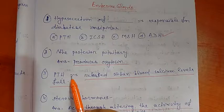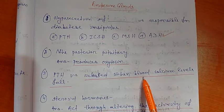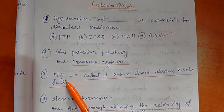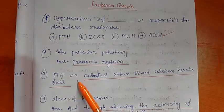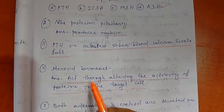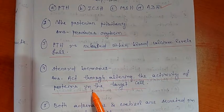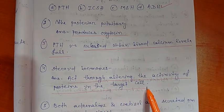PTH, that is parathyroid hormone, is released when blood calcium levels fall because PTH regulates the calcium blood group in the blood. Next.